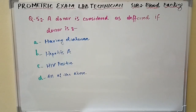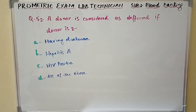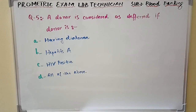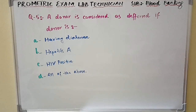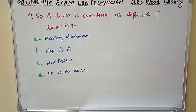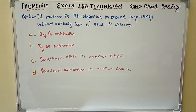Option A: having diarrhea. Option B: hepatitis A. Option C: HIV positive. Option D: all of the above.